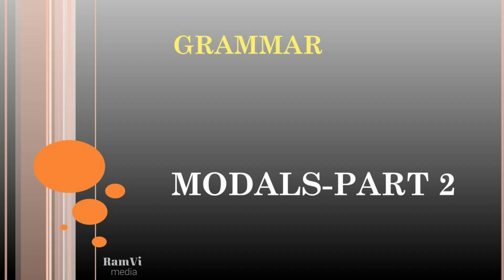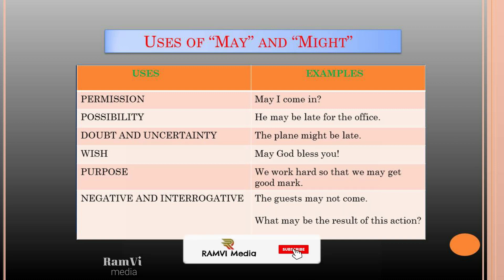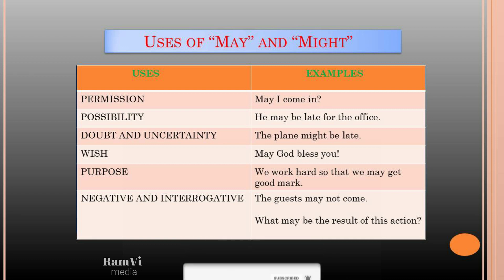First, let us see the modal 'may'. We already know that 'might' is the past tense form of 'may'. Here are the uses: if you want to ask permission, you can use 'may' — for example, 'May I come in?' Next, for possibility: 'He may be late for the office.' For doubt: 'The plane might be late' — it is not yet confirmed, so we can use 'may'.